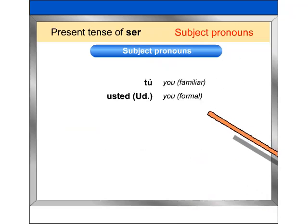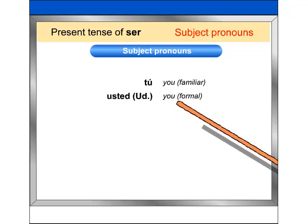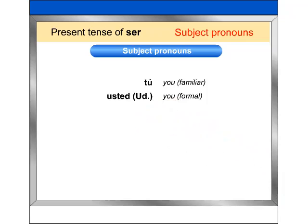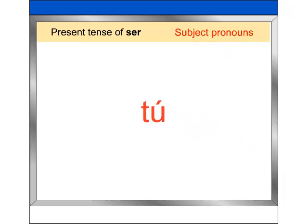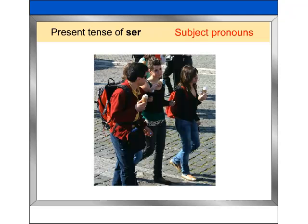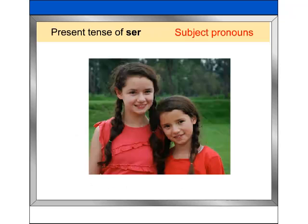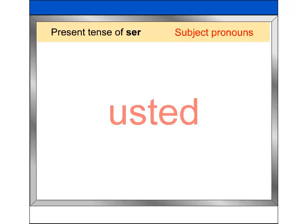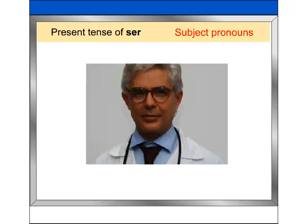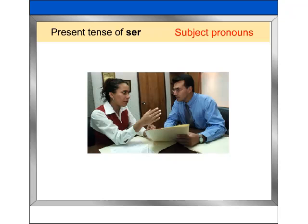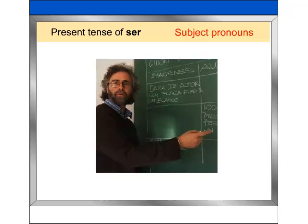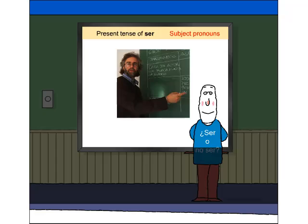Notice that in Spanish there are two equivalents of the English singular subject pronoun 'you.' The subject pronoun tú is used to address a good friend, a family member, or a child. The pronoun usted is used to address somebody with whom you have a more formal relationship, such as your work supervisor, someone you don't know very well, or an important professor, like me.